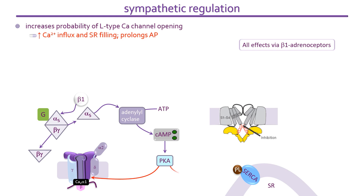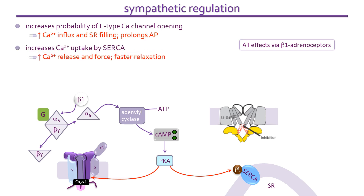Protein kinase A also phosphorylates phospholamban, relieving its inhibition of SERCA and stimulating calcium accumulation by the sarcoplasmic reticulum. This enables muscle to relax quicker and there is more calcium available for release and to activate contraction. Not all of cyclic AMP's actions require protein kinase — it has a direct effect on the HCN channel. The HCN channel is unusual not just because it is activated by hyperpolarization but because it is also gated by cyclic nucleotides.